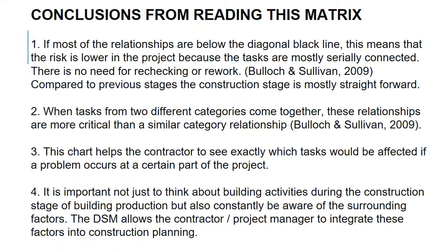We made four conclusions from reading this matrix. First, if most relationships are below the diagonal black line, the risk is lower because tasks are mostly serially connected with no need for rechecking or rework — compared to previous stages, the construction stage is mostly straightforward. Second, when tasks from two different categories come together, those relationships are more critical than same-category relationships; blue and orange category professionals working together is more challenging than two blue-category professionals. Third, this chart helps the contractor see exactly which tasks would be affected if a problem occurs at a certain point. Fourth, it is important not just to think about building activities but to constantly be aware of surrounding factors — the design structure matrix allows the contractor or project manager to integrate these factors into construction.